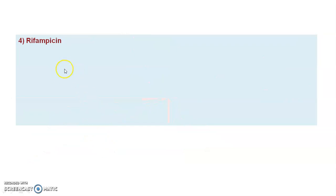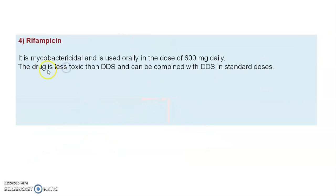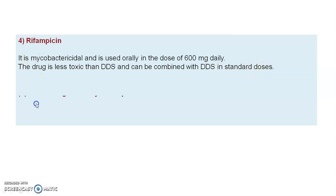The next drug is rifampicin. It is mycobactericidal and is used at a dose of 600 mg daily. The drug is less toxic than DDS and can be combined with DDS in standard doses. Rifampicin is preferred in combination with sulfones.